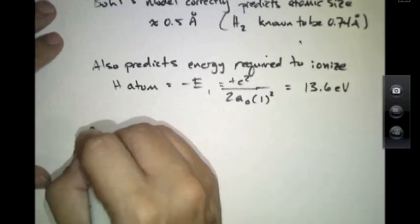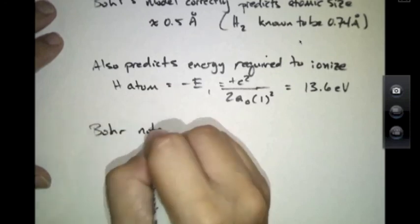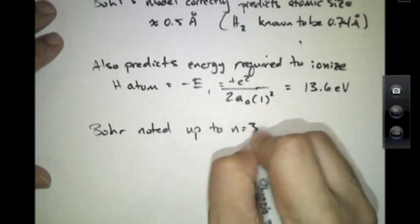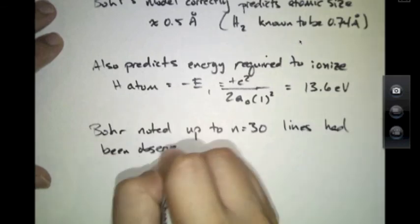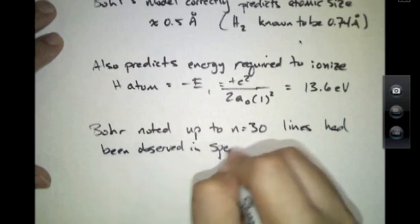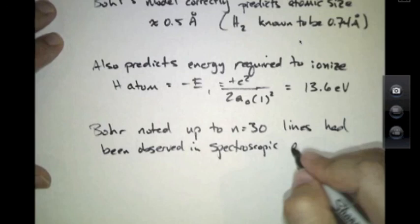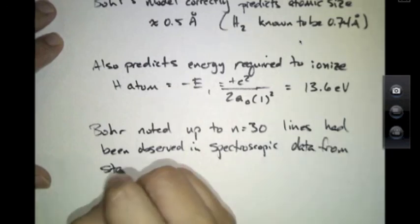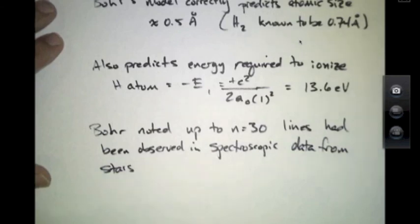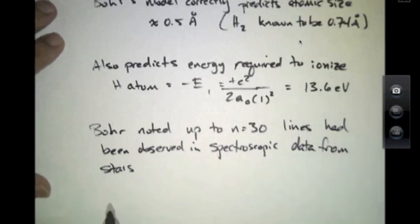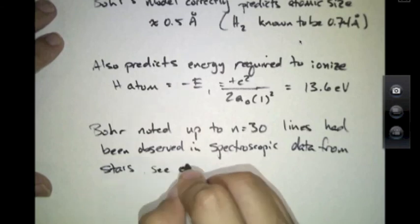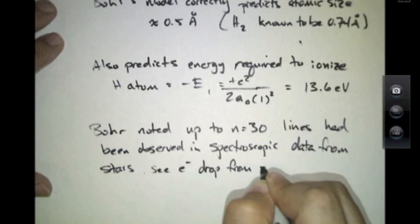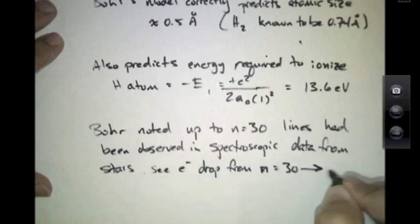Bohr furthermore noted that up to N equals 30 lines had been observed in stars. That's not unreasonable because the gas in a star is considerably less dense at its outer perimeter than the gas here on Earth, and so it would be reasonable to see electrons drop from N equals 30 down to the location of N equals 2.